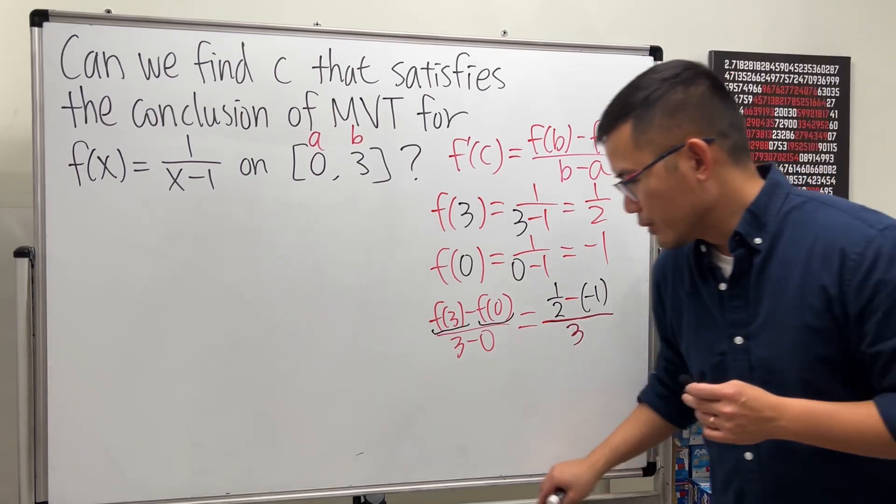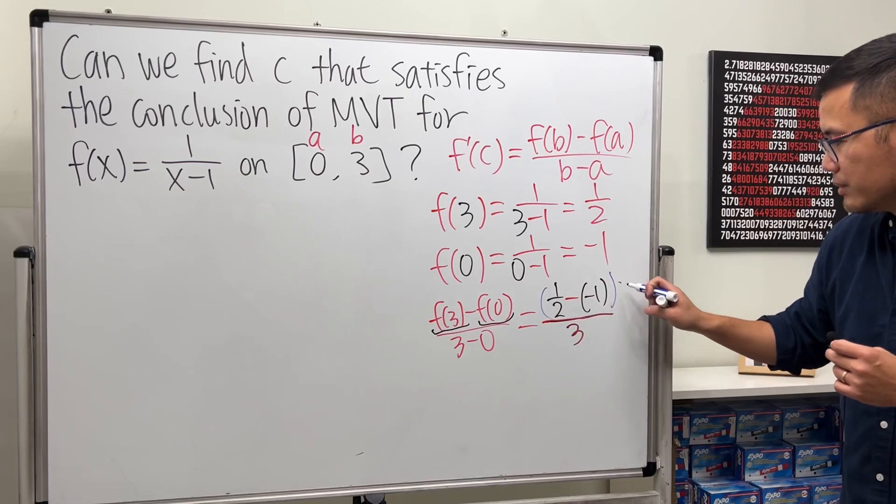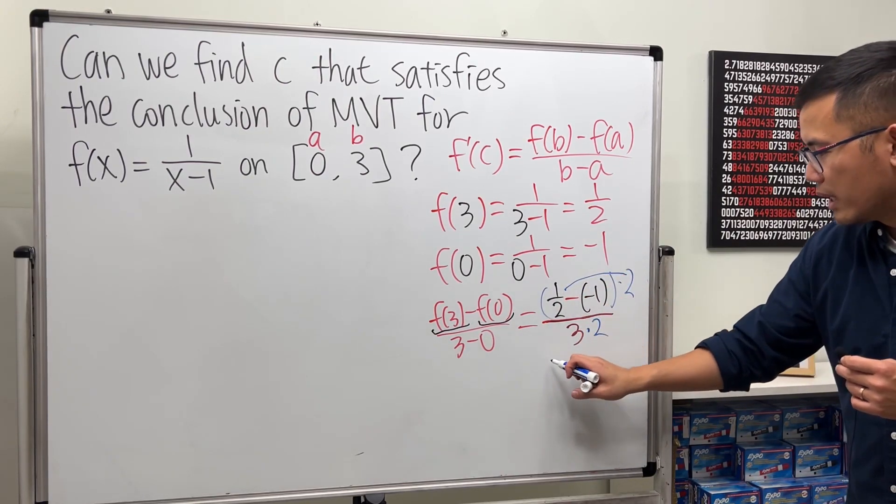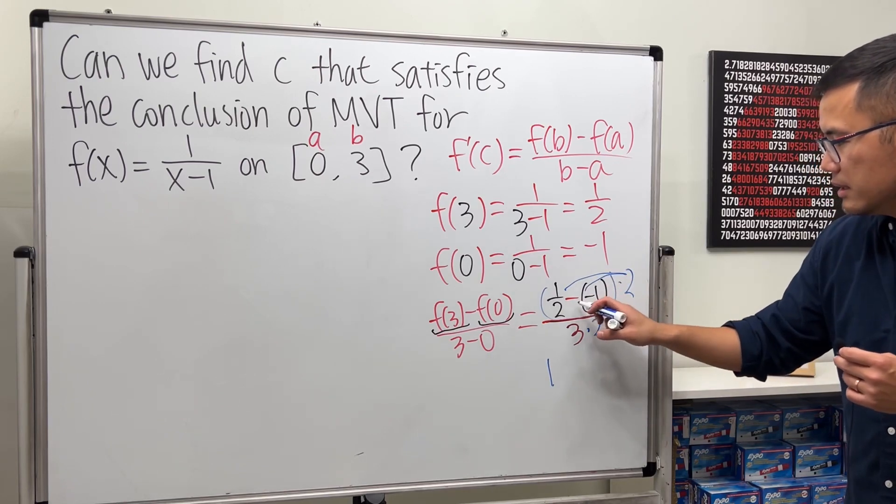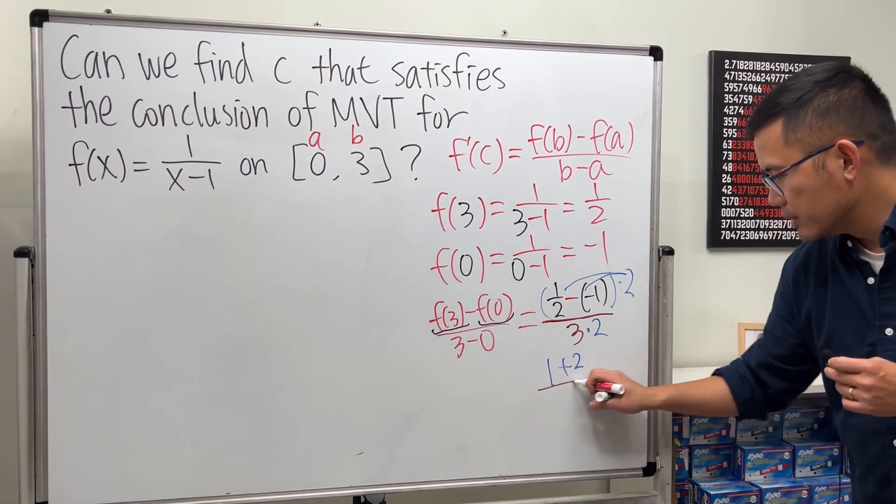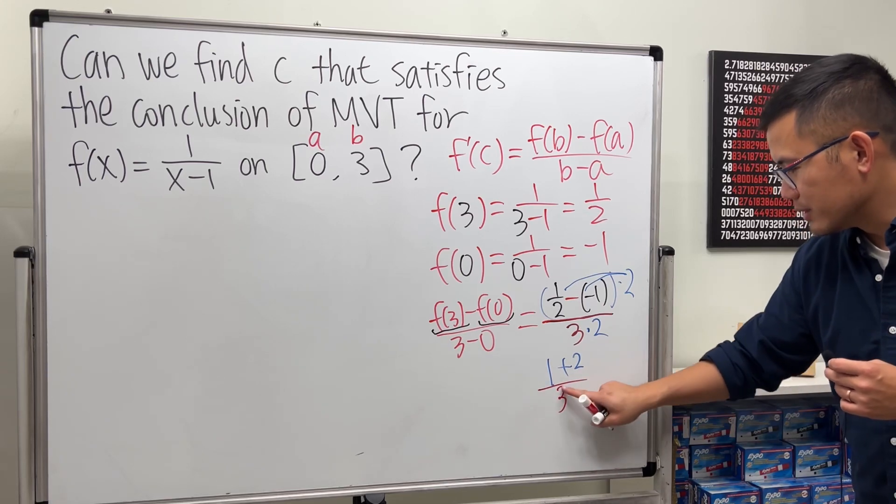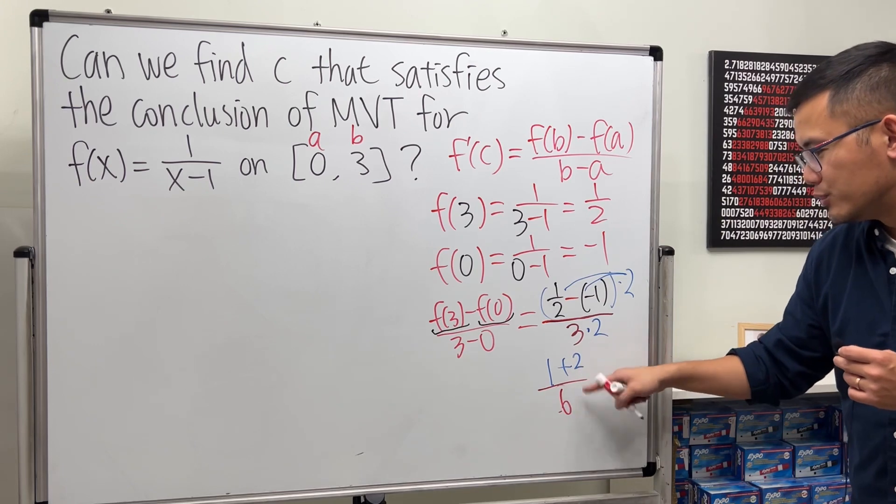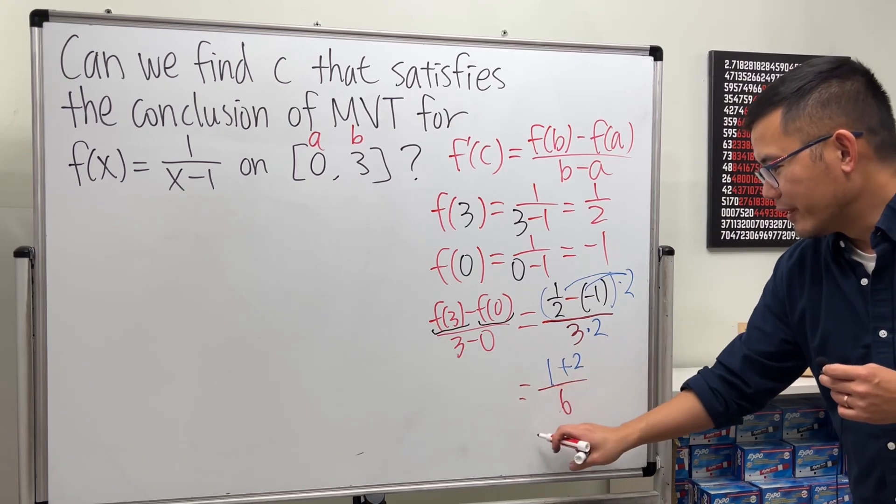To do so, you can just multiply the top and bottom by 2. So this times that is 1, and this times this is negative, so plus 2, and then over 3 times 2, which is 6. Which is 3 over 6, which is 1 half.